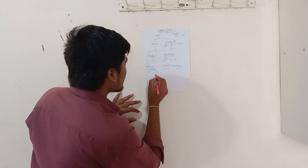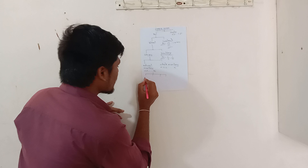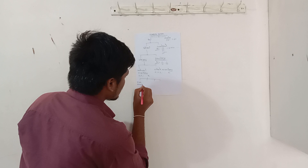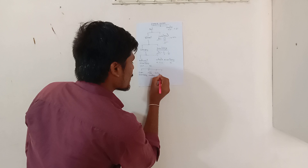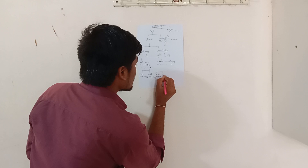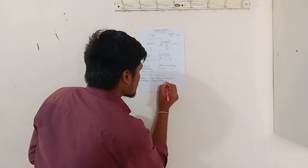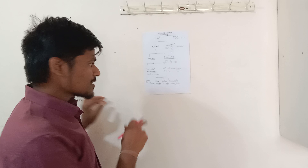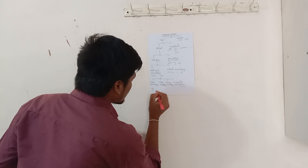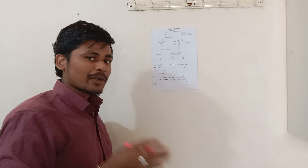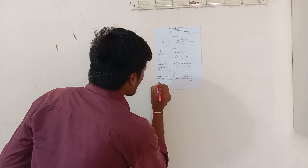Natural numbers are further divided into 4 types. Now we can discuss about even numbers. Even numbers are numbers which are divisible by 2. For example, 4 divided by 2 equals 2, so 4 is an even number. The even numbers are 2, 4, 6, 8, 10, and so on.